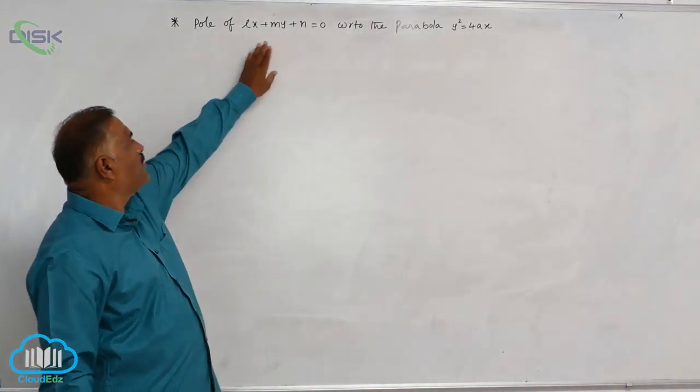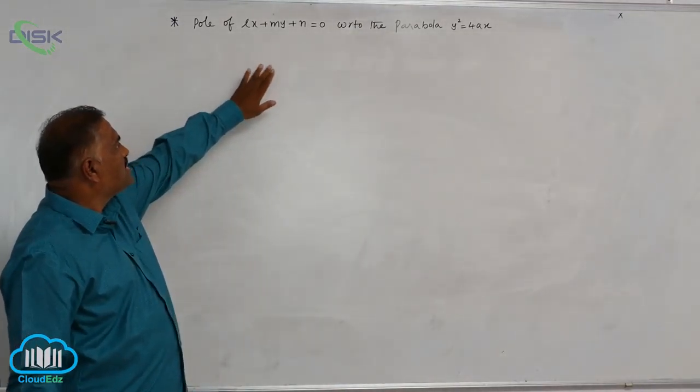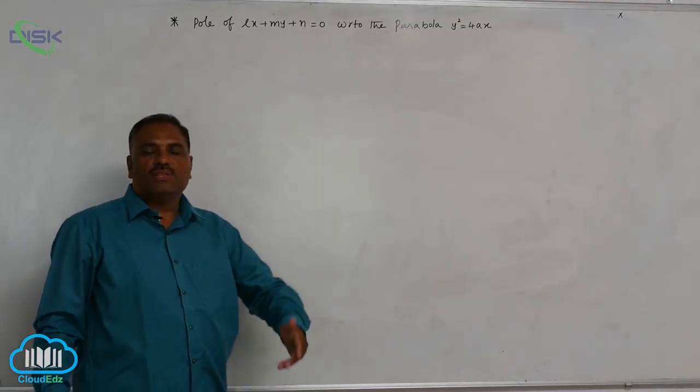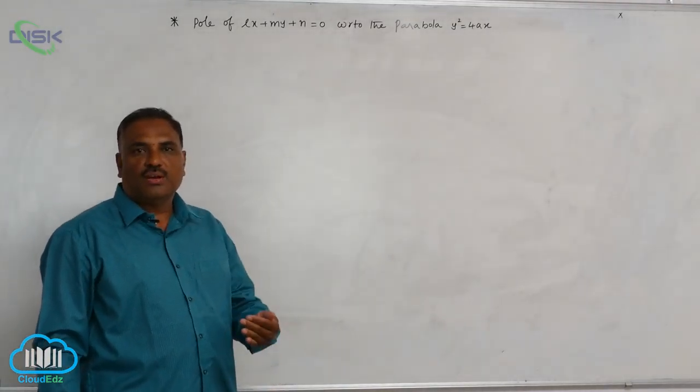We will discuss about the pole of the straight line Lx plus My plus N equal to 0 with respect to the parabola y square equal to 4Ax.